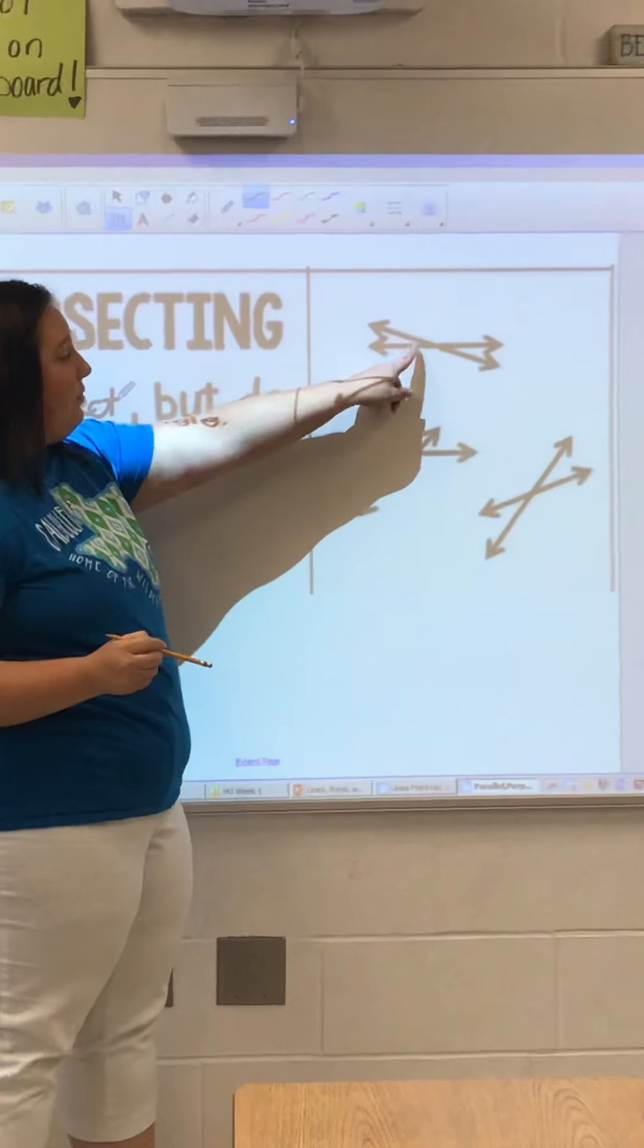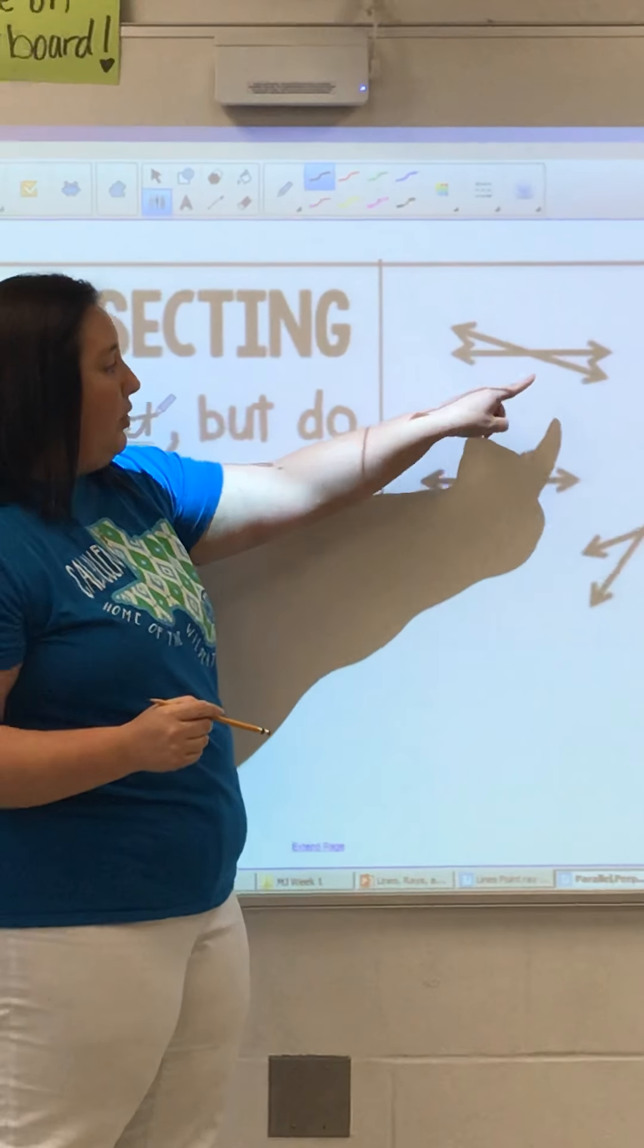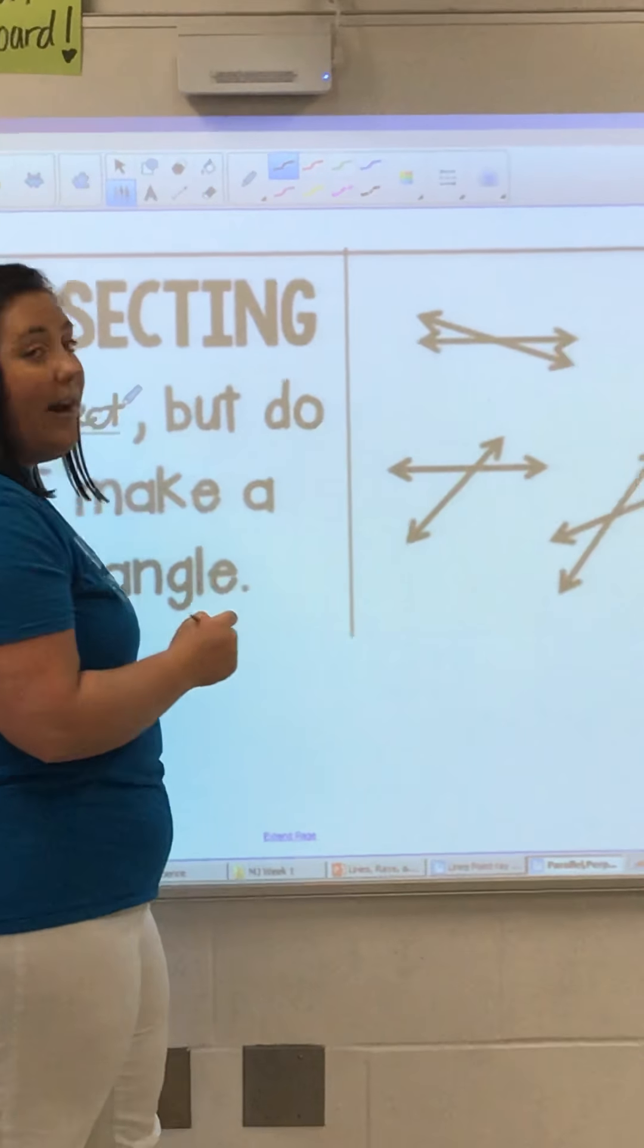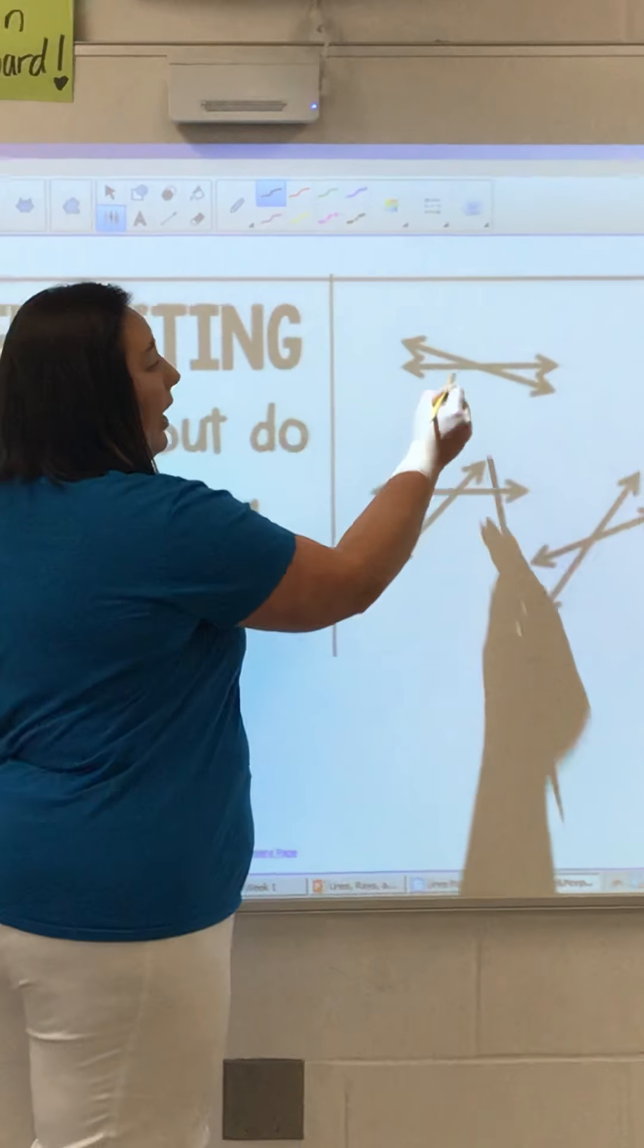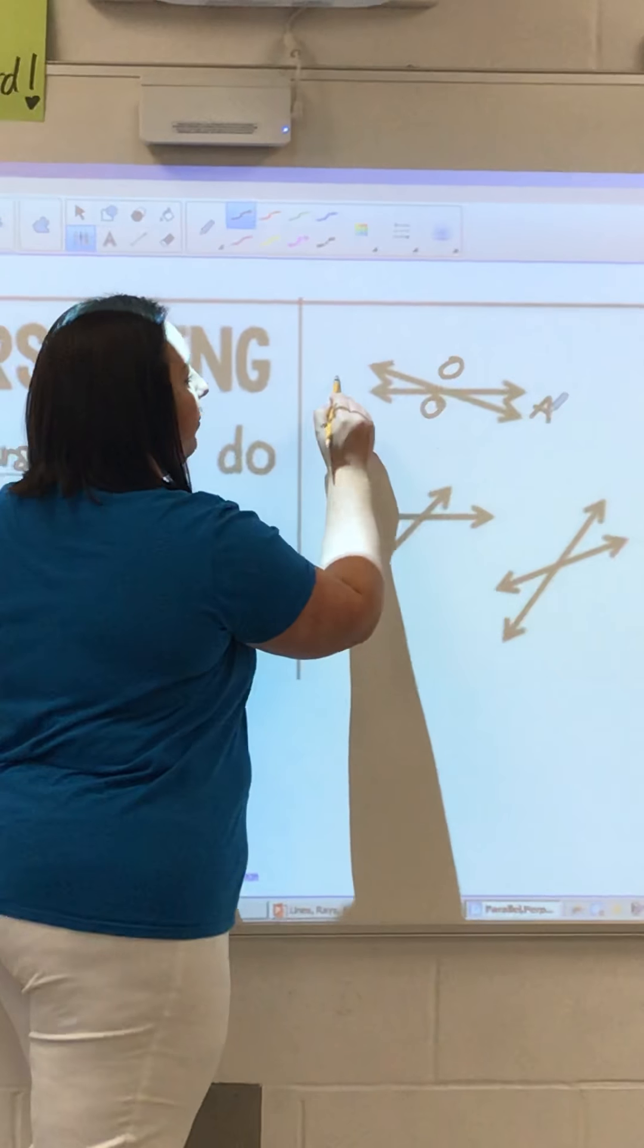For example, right here, you see that the lines do intersect, but you don't see right angles, or you don't see 90 degrees. What they are going to create is they are going to create obtuse angles and acute angles.